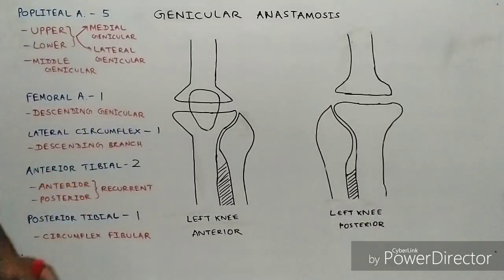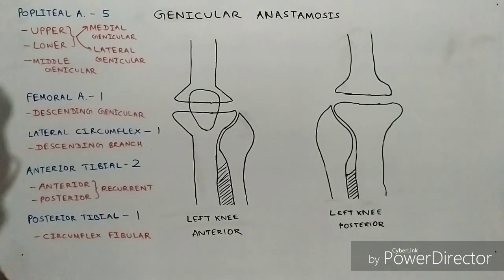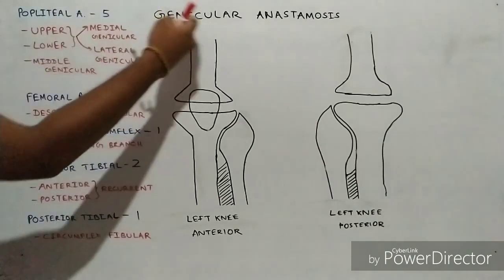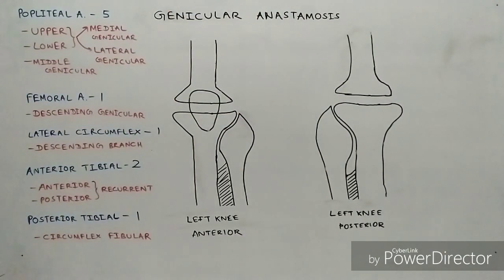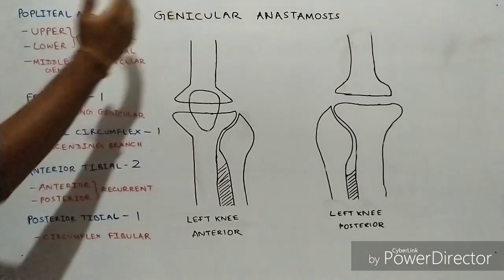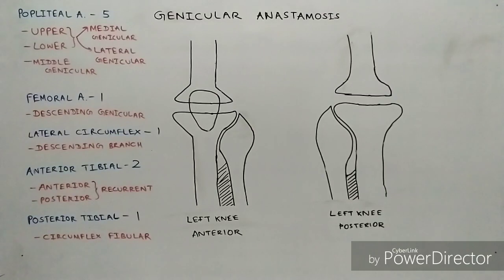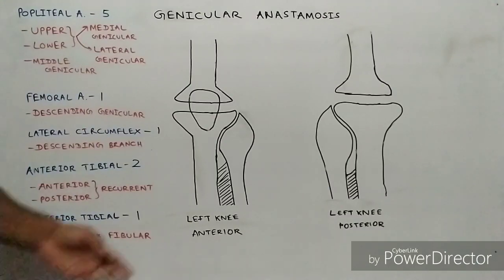Today we are going to talk about genicular anastomosis — in simple words, knee anastomosis. As you all know, this anastomosis is formed by several blood vessels from different arteries. Here I have indicated those branches which contribute to this anastomosis, and it is noted that these branches arise from five different parent arteries.